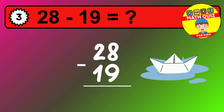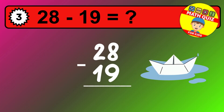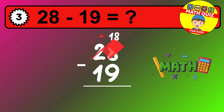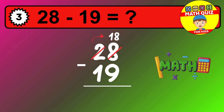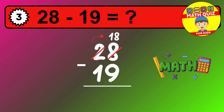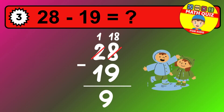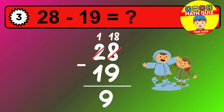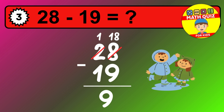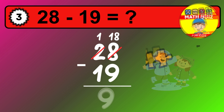Let's solve this step by step. We start with the units. 8 minus 9 is not possible, so we need to regroup. We take one 10 from the tens column. Now we have one ten, and the units become 18. Now we subtract. 18 minus 9 is 9. Then we go to the tens. 1 minus 1 is 0. The final answer is 9.